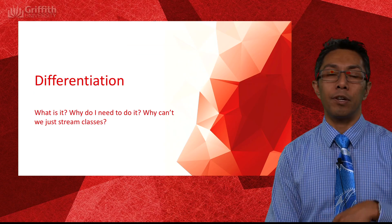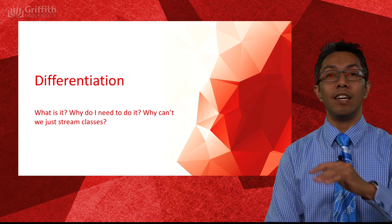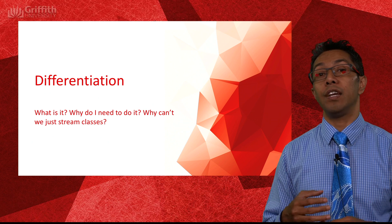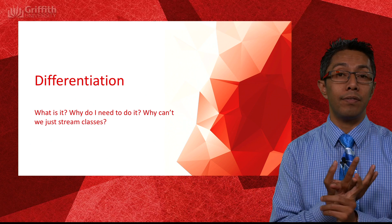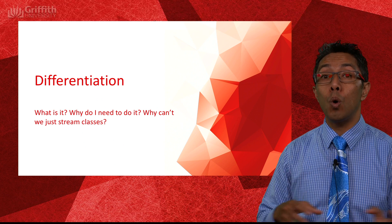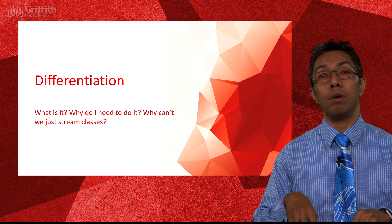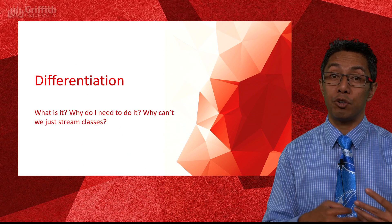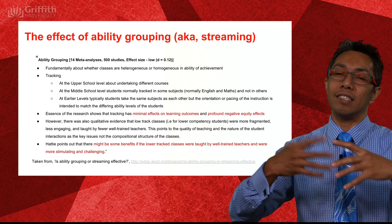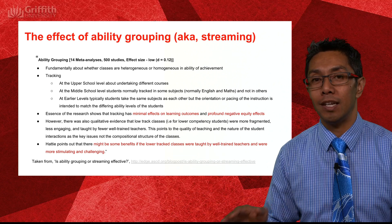Let's switch to differentiation — specifically how to differentiate your success criteria, one of the low-hanging fruit in terms of differentiation. There is differentiation for different visual, auditory, cognitive, and physical needs, but those areas have whole courses devoted to them. The type of differentiation we'll look at here is more around content and curriculum.